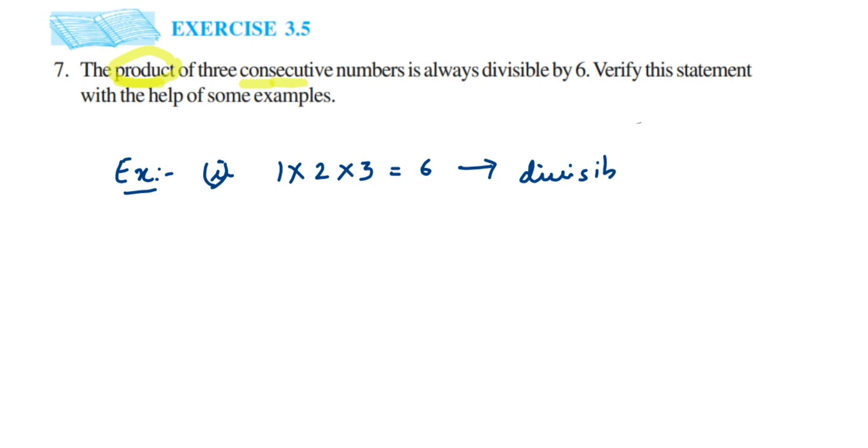And the second number we got is 24, which is 2 into 3 into 4. 2, 3, 4 are consecutive numbers. So 2 into 3 into 4 is 24, and this number is also divisible by 6.